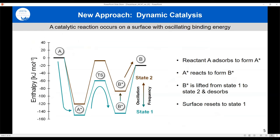The question is: will we find that magic material able to appeal to every individual elementary step? I want to propose an alternative. Rather than finding one material that meets all the demands simultaneously, let's take a dynamic material that changes with time such that when each event in the elementary sequence happens, the catalyst changes for that particular step.